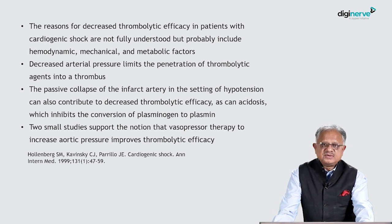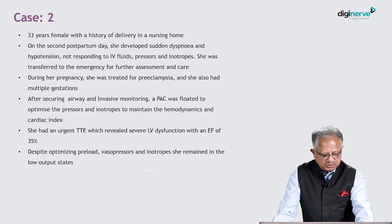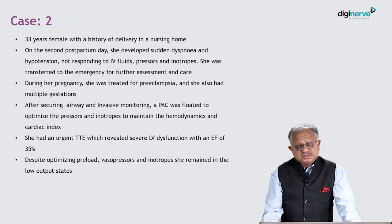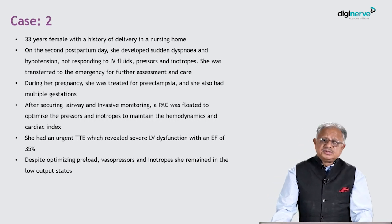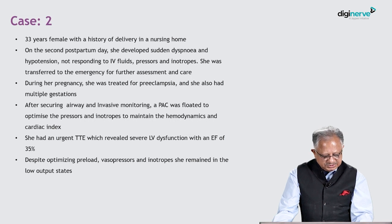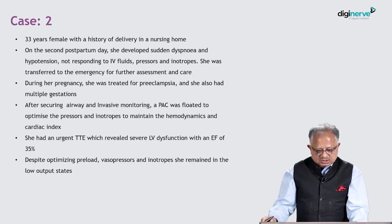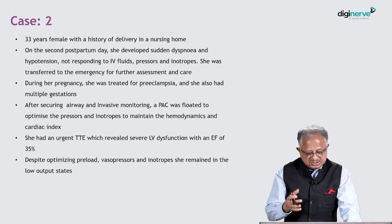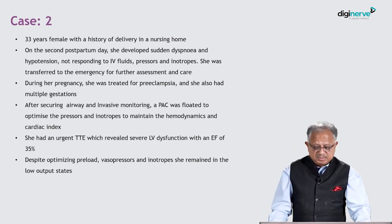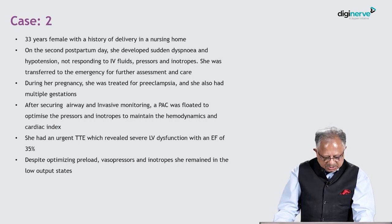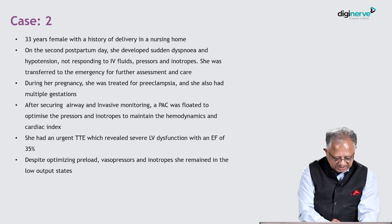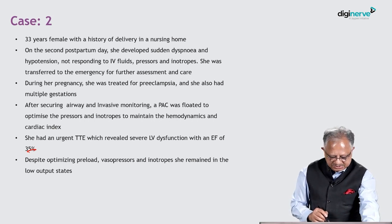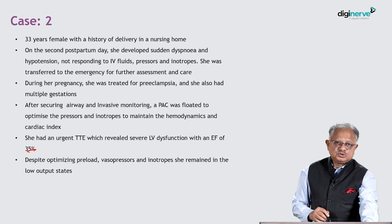Some studies have recommended inotropic and vasopressor therapy to increase perfusion during thrombolysis. In Case 2, a 33-year-old female post-delivery presented with sudden dyspnea and hypotension that did not respond to vasopressors or IV fluids. She had preeclampsia during pregnancy. The airway was secured, invasive monitoring lines were placed, and a pulmonary artery catheter was floated to optimize inotropic therapy. Urgent transthoracic echo revealed severe LV dysfunction with an EF of 35%. Despite optimizing vasopressors and inotropes, she remained in a low output state with low stroke volume.